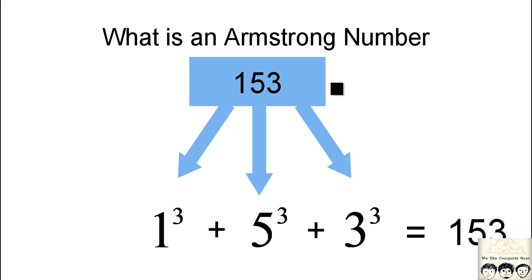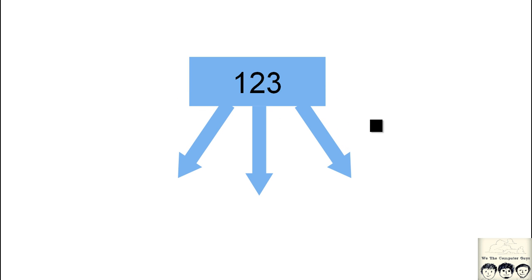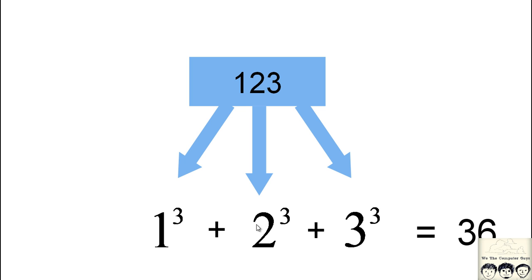Let me take another example to make it more clear. Say you have the number 123. You split the digits into 1, 2, and 3, cube them, and add them. In this case the sum of cubes is not equal to 123 — it's actually 36. So this is not equal, and therefore 123 is not an Armstrong number.